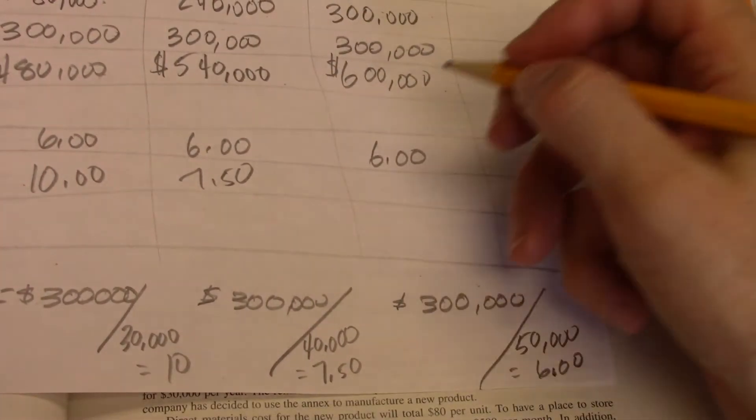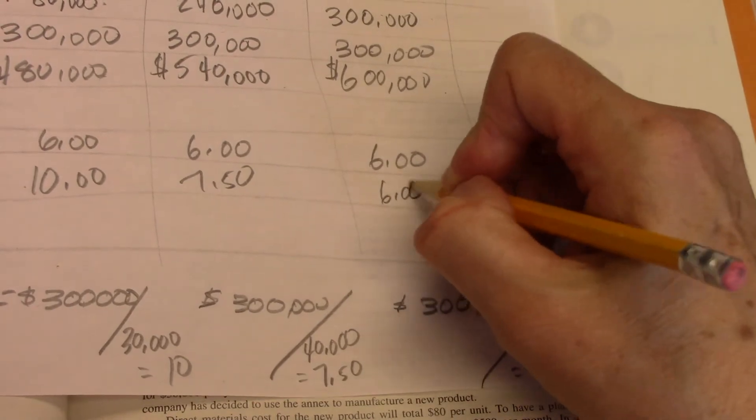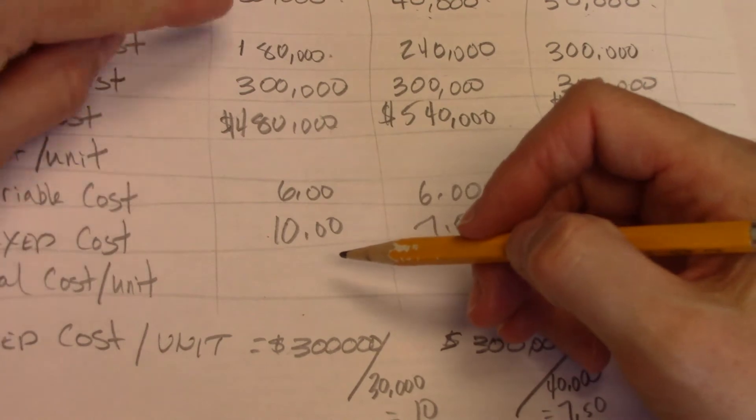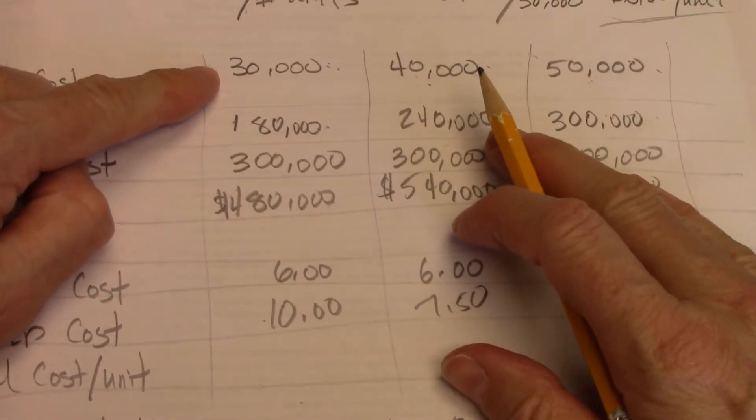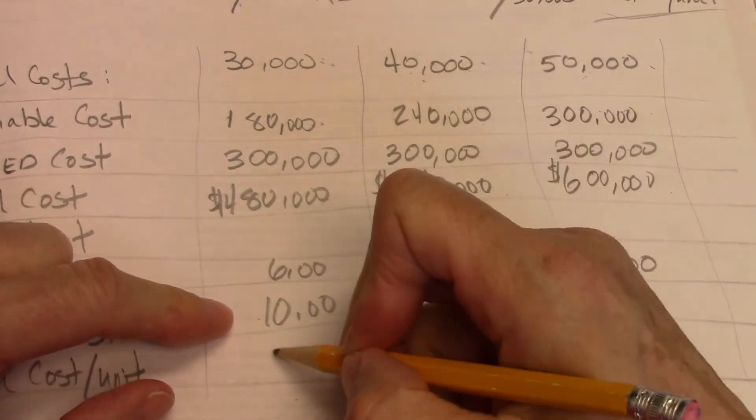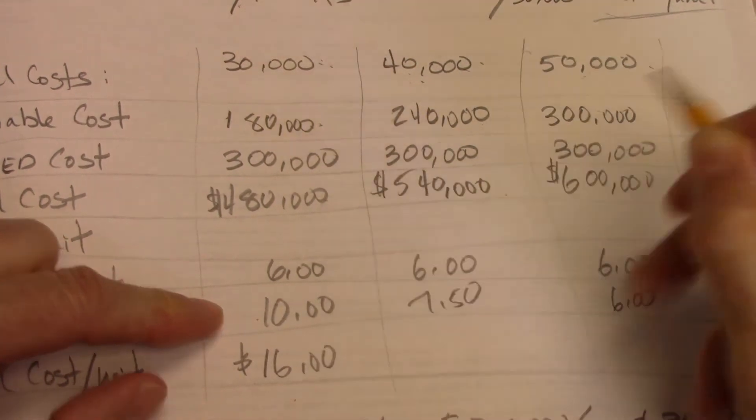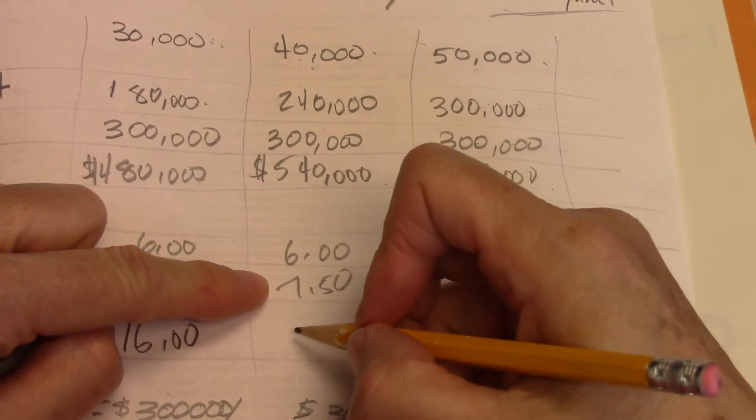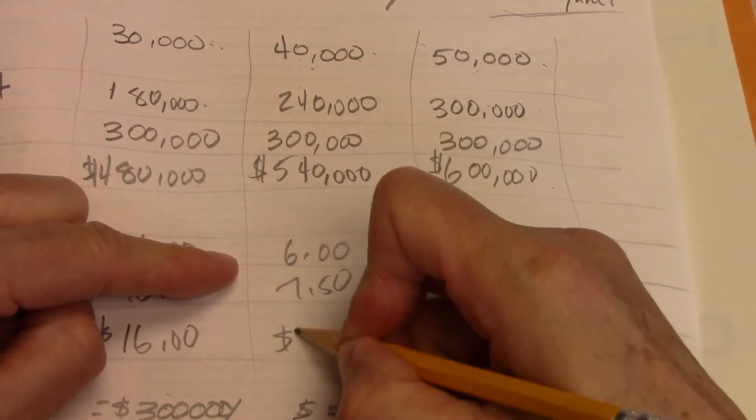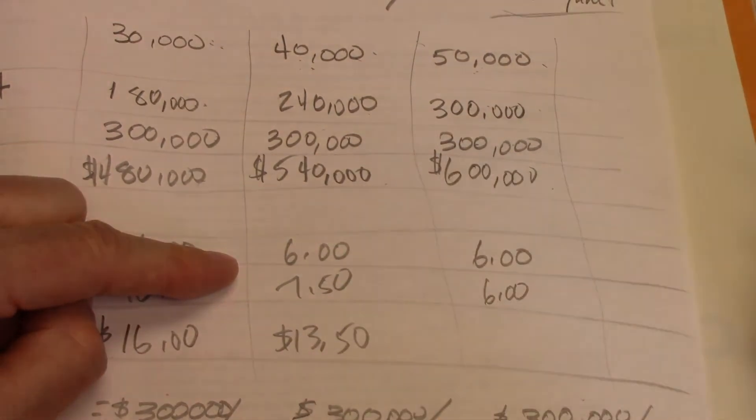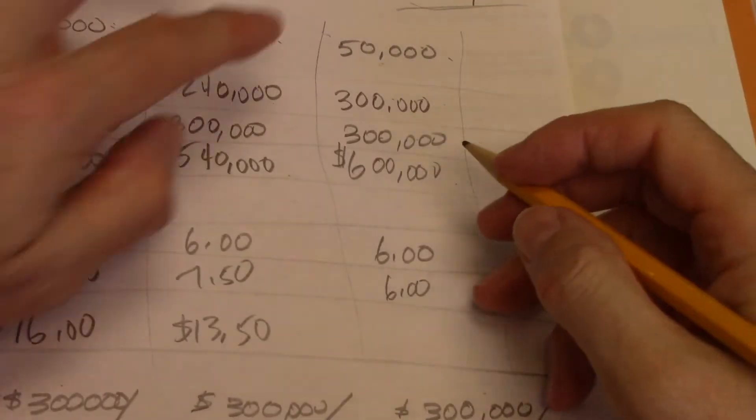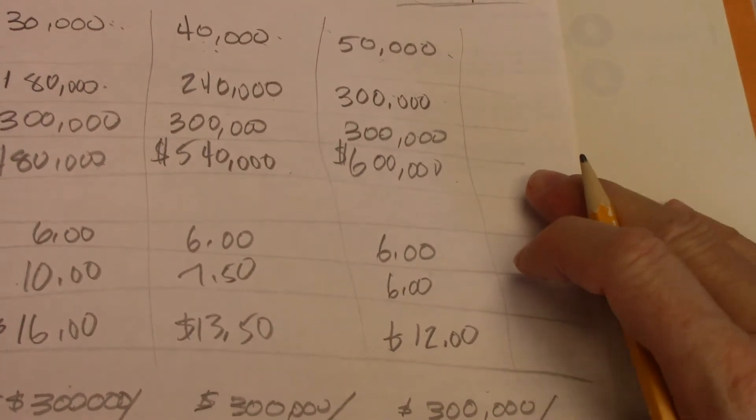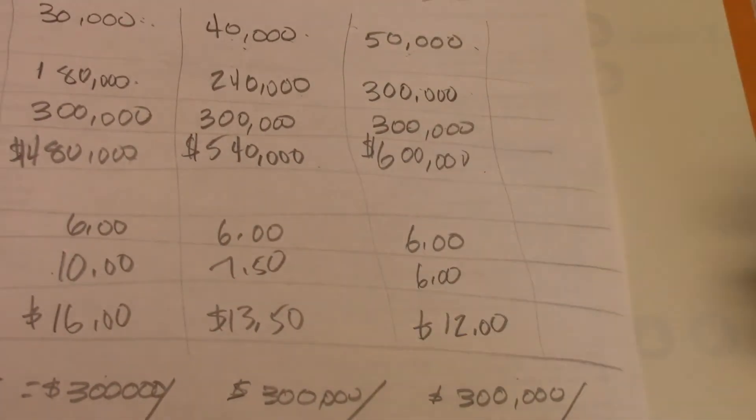So what's my total cost per unit if I make 30,000 units? My total cost per unit is $16. If I make 40,000 units, my total cost per unit is $13.50. And if I make 50,000 units, my cost per unit is $12.